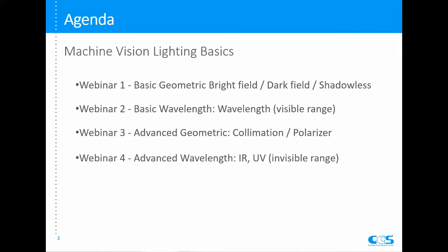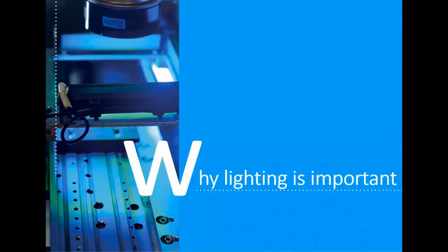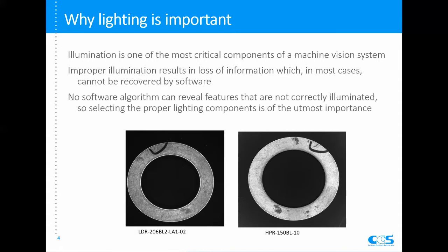Before we go into the lighting technique itself, I'd like to spend some time talking about why lighting is so important in machine vision. Lighting is used to create contrast on the feature and also remove noise on the background — that's why lighting is so important. In CCS we have over 500 standard products. If we need to test them one by one, you're never going to find a good one. So that's where lighting technique comes into place.